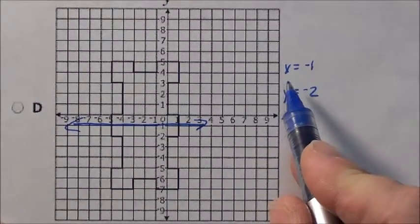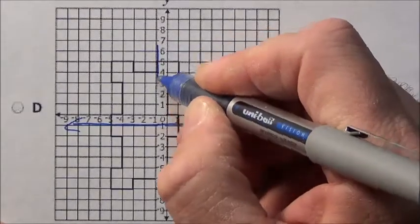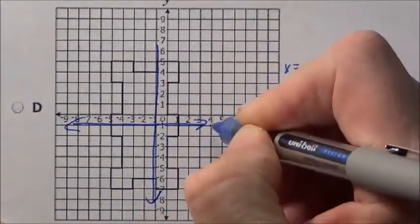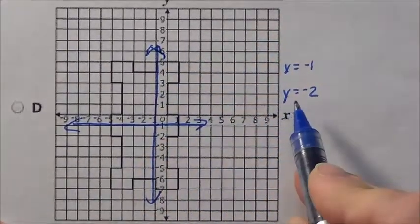I really screwed that up, didn't I? X equals negative 1, my friends, is right here. I drew the wrong thing. I did y equals negative 1, not thinking because I already knew I had my answer. Not smart.